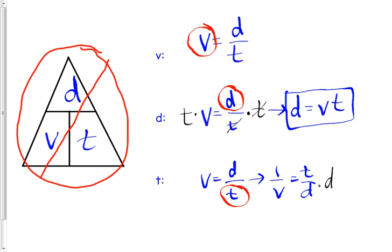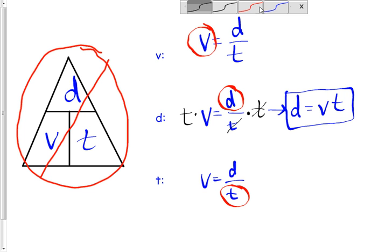Now, the easier way that some of you guys might find it is to multiply our t out on both sides, just like we did before. Okay? Crosses it out there. Then that gives us d equals v times t.